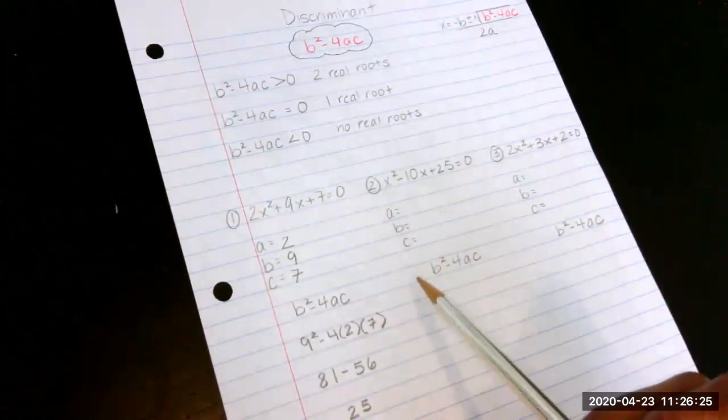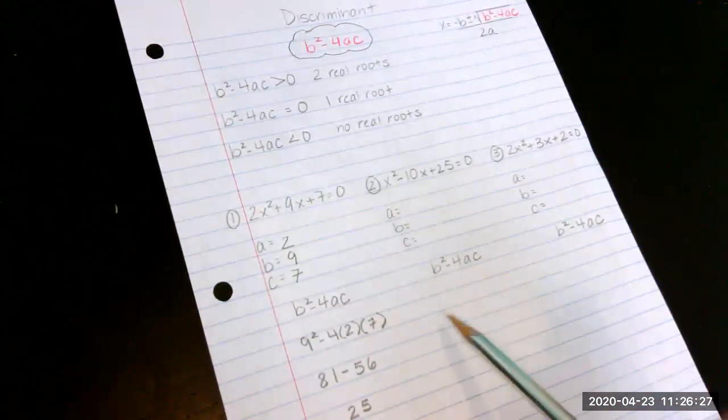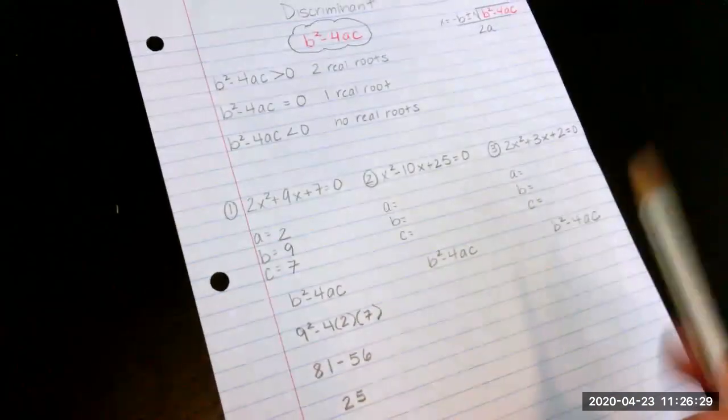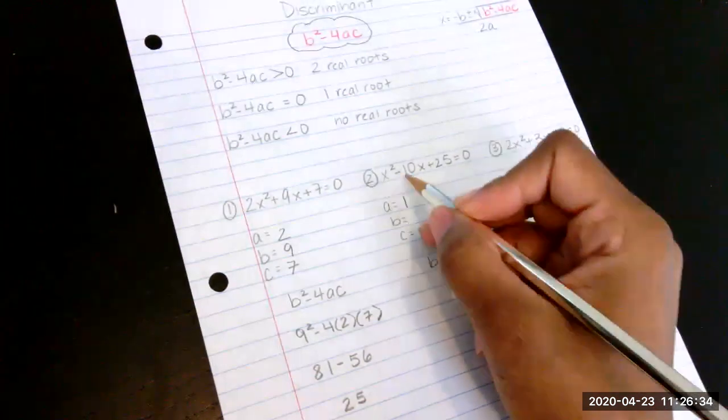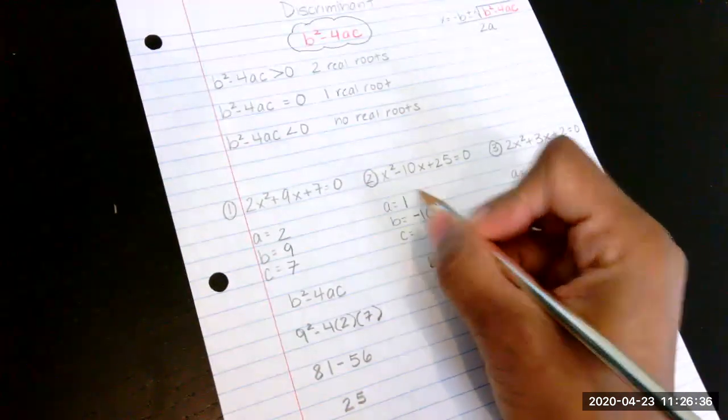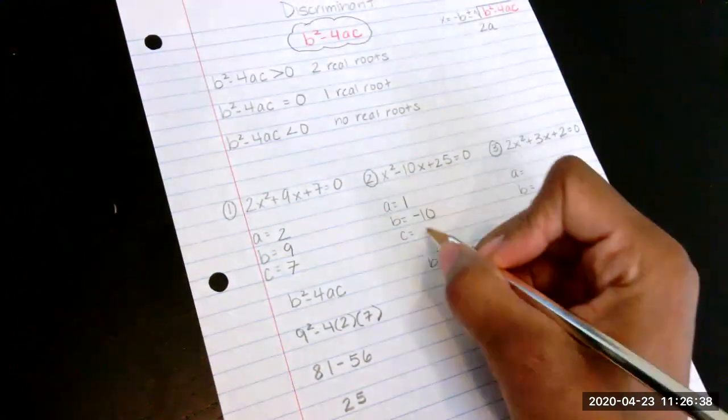I want you to find a, b, and c for number two, and then plug the numbers into the formula, and then resume. Awesome. So for this case, we have 1 for the a, we have a negative 10 for our b, and then we have a c that's 25.